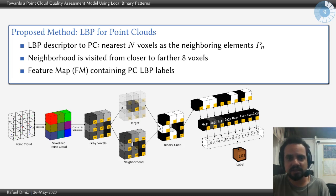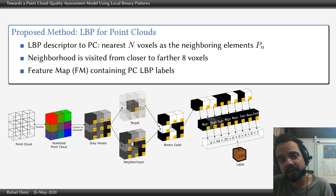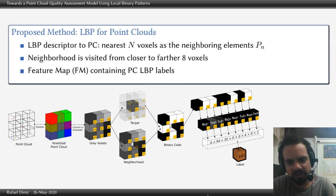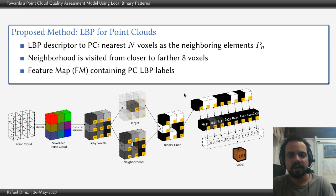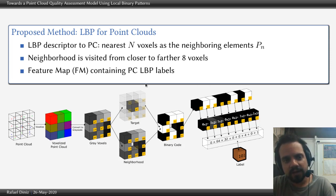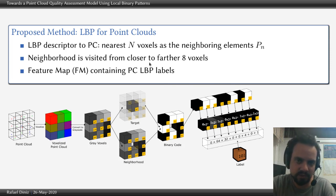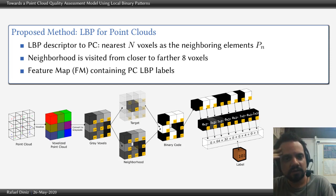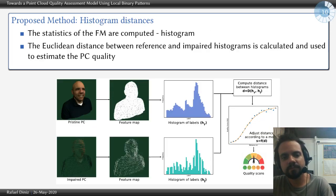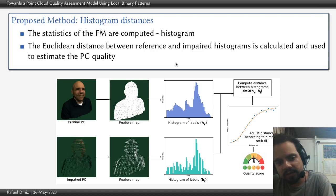After voxelization, we apply the LBP adapted for point clouds. We adapted it from the 2D approach: we take the 8 nearest points of each point to calculate the LBP label, visiting points from the closest to the farthest. With this approach, we get the feature map with point cloud LBP labels. With these labels, we create a histogram of the frequency of each label. This graph shows how this process works — we get the feature map, calculate the histogram of the labels, and compare.